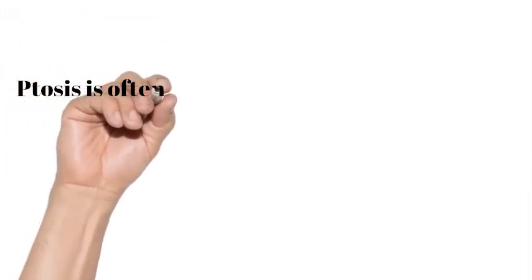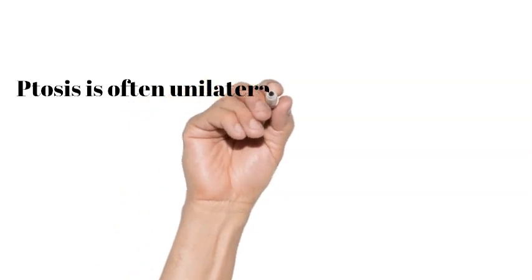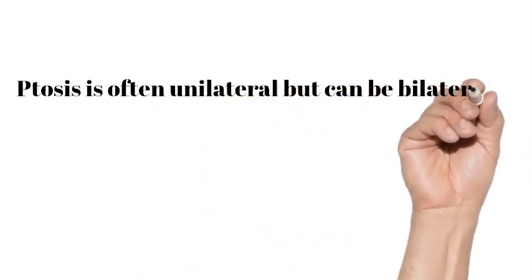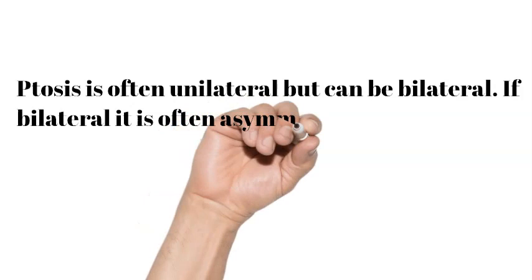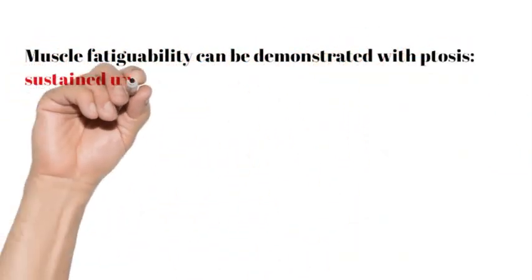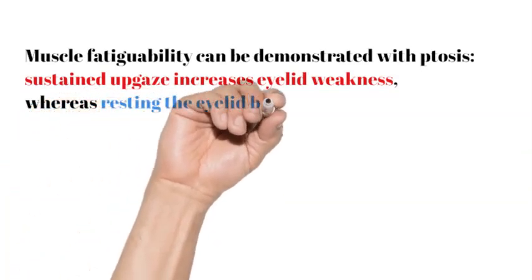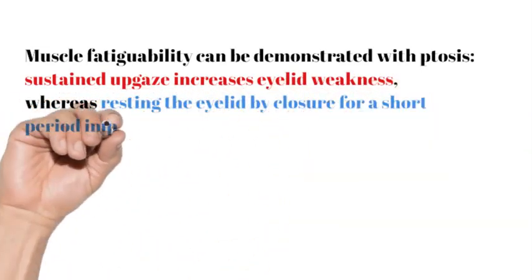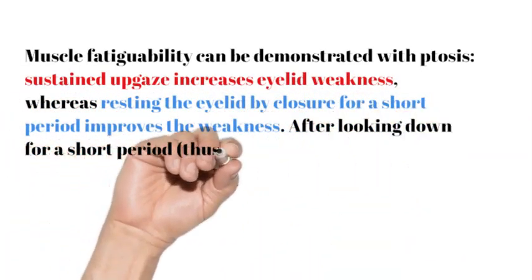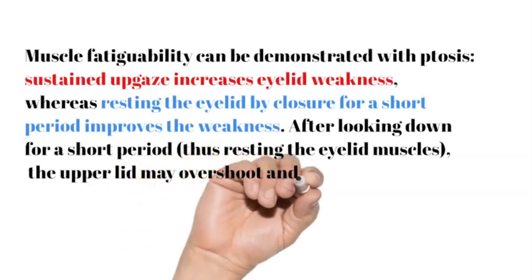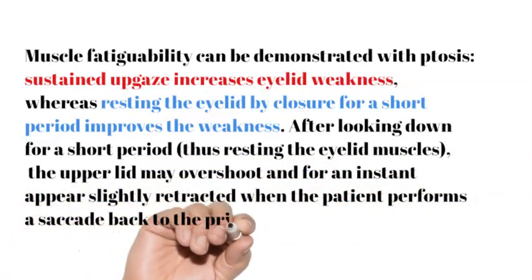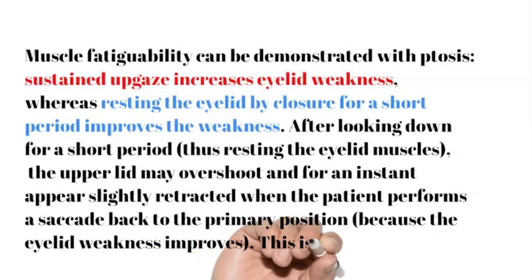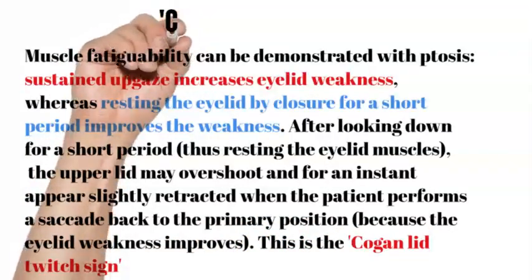Clinical Notes: Ptosis is often unilateral, but can be bilateral. If bilateral, it is often asymmetrical. Muscle fatigability can be demonstrated with ptosis, as sustained up gaze increases eyelid weakness, whereas resting the eyelid by closure for a short period improves the weakness.